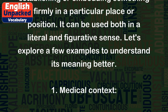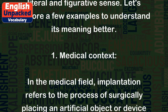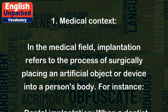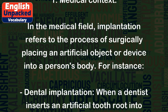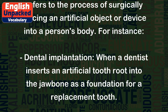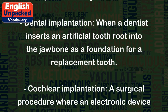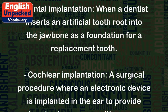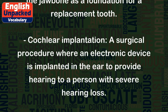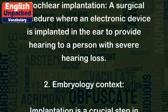Let's explore a few examples to understand its meaning better. In the medical field, implantation refers to the process of surgically placing an artificial object or device into a person's body. For instance, dental implantation is when a dentist inserts an artificial tooth root into the jawbone as a foundation for a replacement tooth. Cochlear implantation is a surgical procedure where an electronic device is implanted in the ear to provide hearing to a person with severe hearing loss.